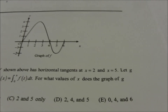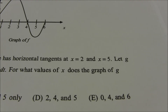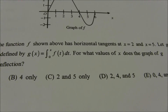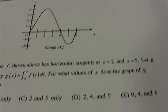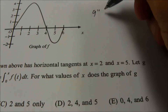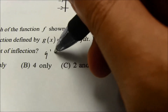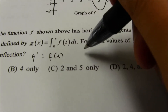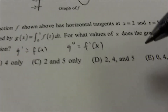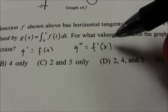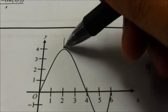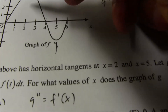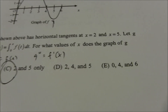Number 17: g is defined as the integral from 0 to x of function f shown on the graph. We want to know where the graph of g has a point of inflection. Since g equals the integral of f, g prime equals f of x, and g double prime equals f prime of x. We're looking for where f prime changes sign — where f changes from positive to negative slope or vice versa. That happens at x equals 2 and x equals 5, which is option C.